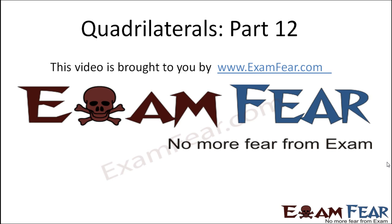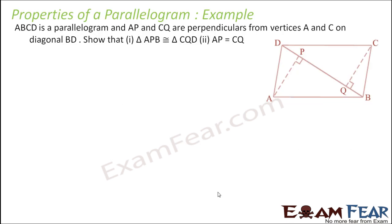Hello friends, this video on quadrilaterals part 12 is brought to you by examfear.com — no more fear from exams. Let's take one more example: ABCD is a parallelogram. AP and CQ are perpendicular from the vertices A and C on the diagonal BD. We have to prove that two triangles are congruent.